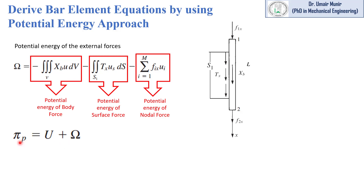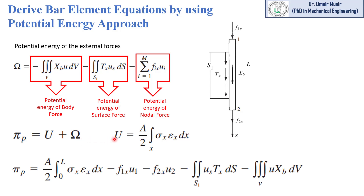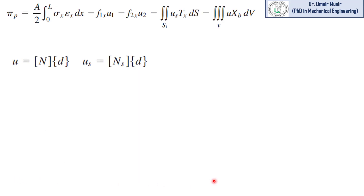Phi_p is the total potential energy, equal to strain energy plus omega, where omega is the potential energy of the external forces. When we add the strain energy expression and these two terms, we get the equation for total potential energy in this form.